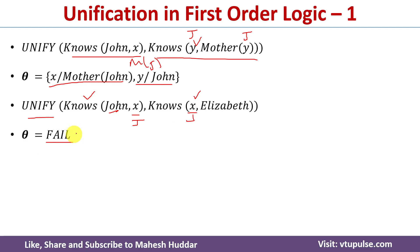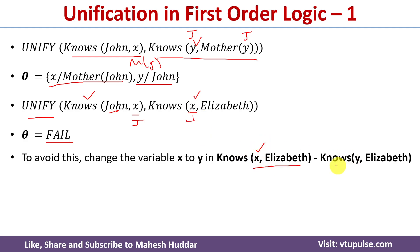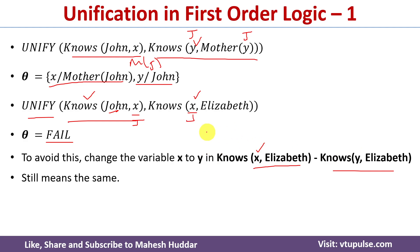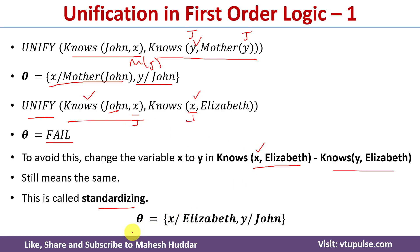Whenever we have the same variable in two expressions, we can replace one variable with a new unused variable. In this case, we replace x in the second expression with y, so it becomes Knows(y, Elizabeth). Now the first expression is Knows(John, x) and the second is Knows(y, Elizabeth). We can now perform unification by replacing x with Elizabeth and y with John. This process of changing variables is called standardizing. So theta is: x should be replaced with Elizabeth and y should be replaced with John.